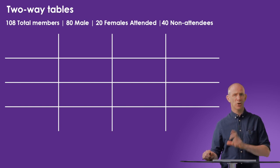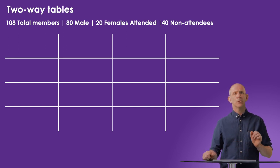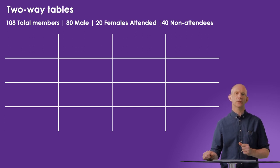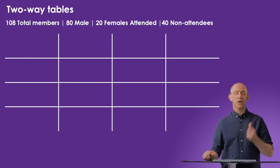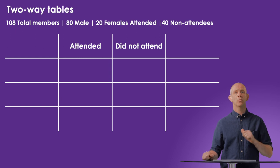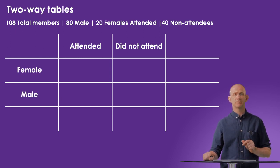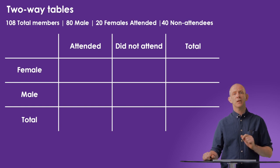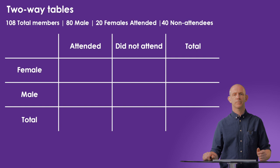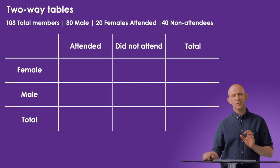Two-way tables are really useful as long as there are no overlapping pieces of data — no one can both attend and not attend the match. Before laying out our table we need to consider how the data can be categorized. Supporters either attended the match or did not attend, and they were either male or female, so we can use these as our labels. We also need to remember to include a total for each of the rows and columns.